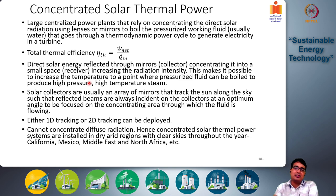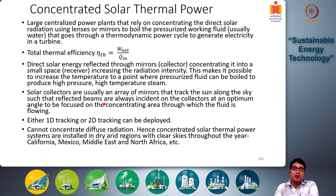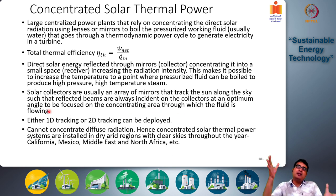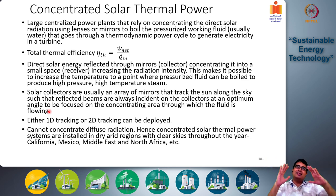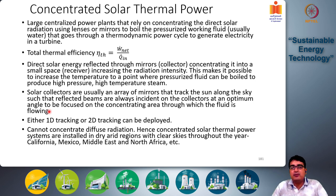Solar collectors are usually an array of mirrors that track the sun along the sky such that the reflected beams are always incident on the collectors at an optimum angle, focused on the concentrating area through which the fluid is flowing. The mirrors track the sun so that the focus area of these curved mirrors is always incident on the collector surface through which the heat transfer fluid is flowing.